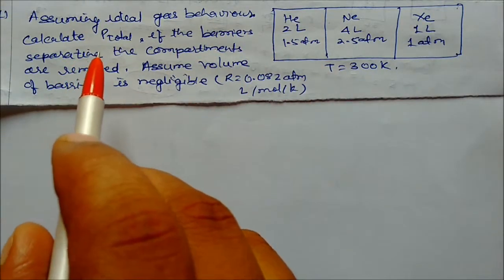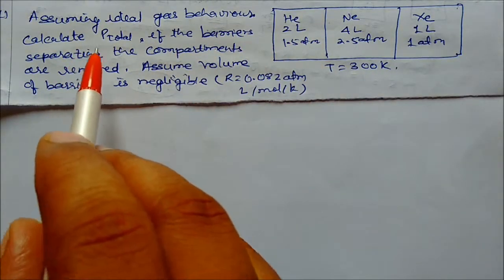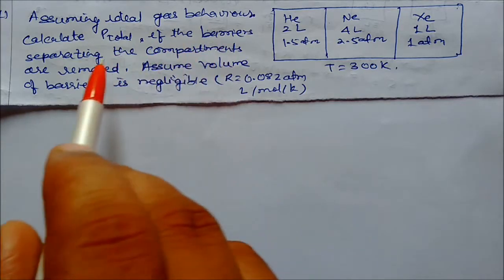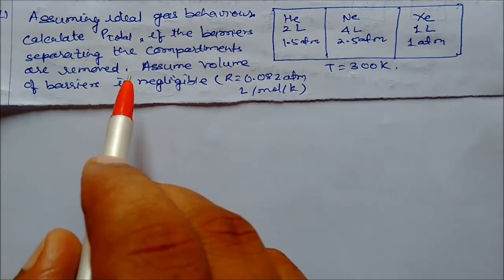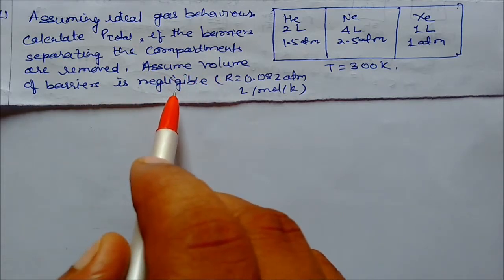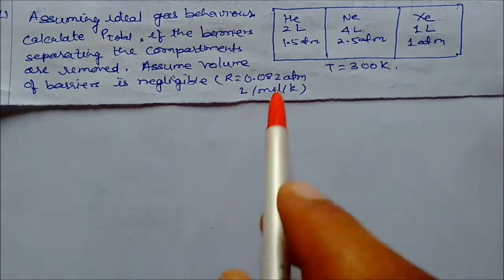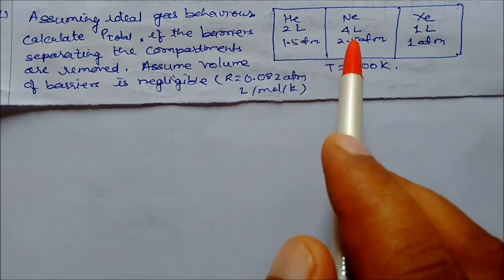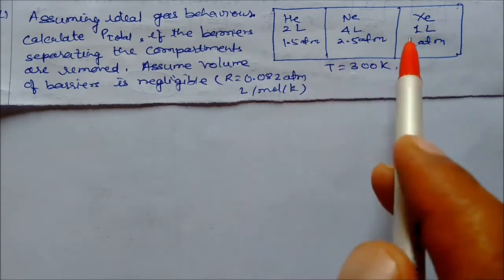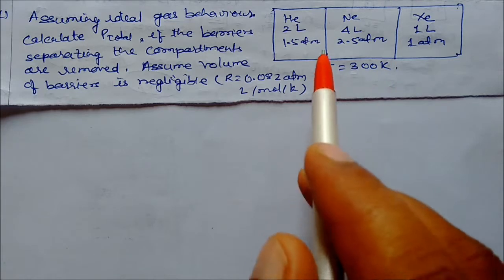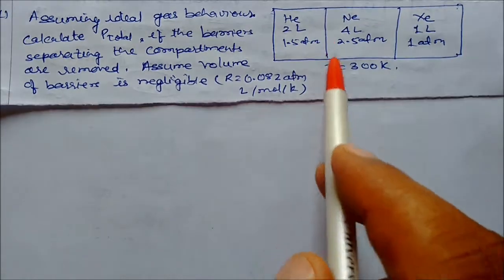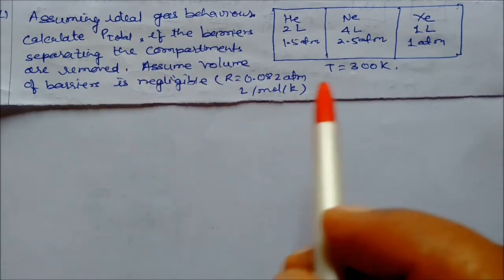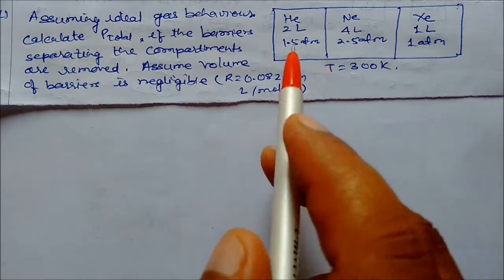Here we have another question: assuming ideal gas behavior, calculate total pressure if the barriers separating the compartments are removed. Assume volume of barrier is negligible. We have three compartments — helium, neon, and xenon — each with volumes of two liters, four liters, and one liter respectively. Pressure and temperature are also given. If we remove the barriers, what is the total pressure?